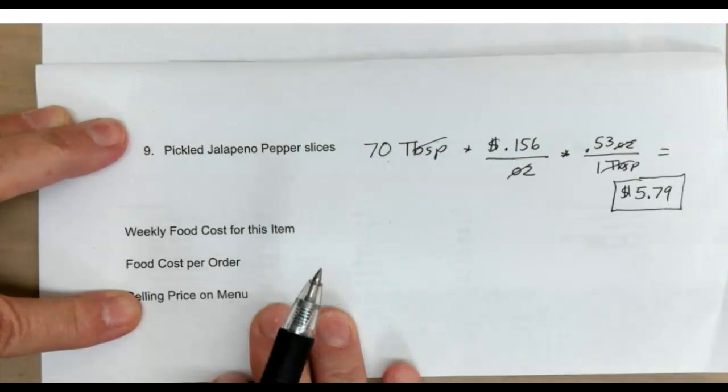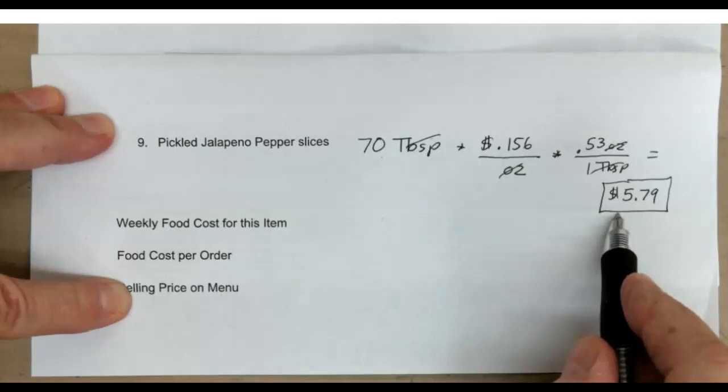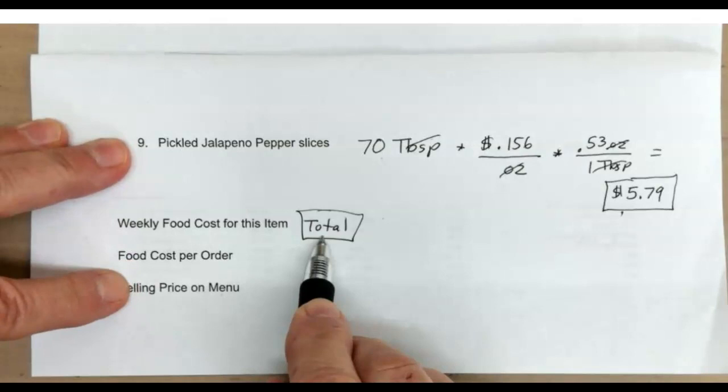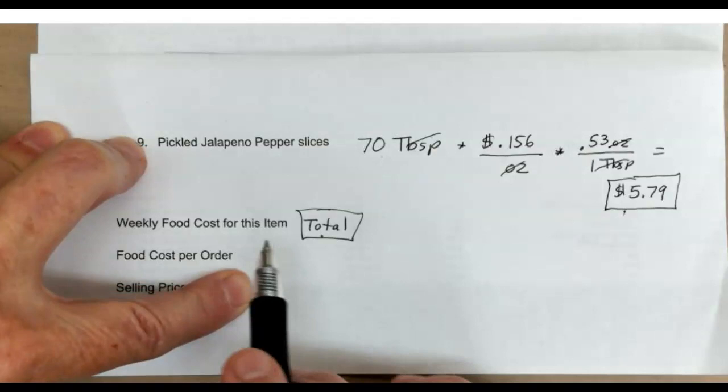Then the last part of this assignment is that you have to add up all of those boxed-in figures for the nine ingredients. You're going to figure out what that total is. Let me tell you, it's going to be more than $400.